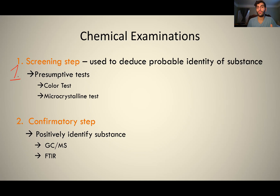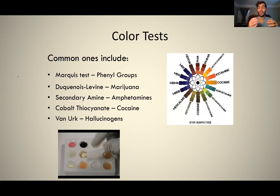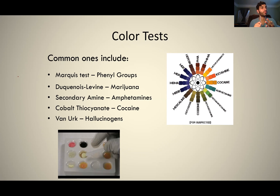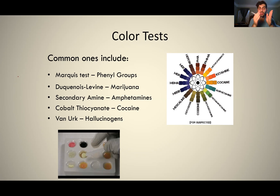In controlled substances analysis, we have two types of screening tests and we usually do them in this order: a color test and then a crystalline test. A color test is where we have colorless liquids, and when we add a little amount of the drug to that colorless liquid, it will change color depending on what drug family it's part of. The big drug families are amphetamine, methamphetamine, the opiates — heroin, morphine, codeine — and cocaine, which will cause a different color reaction. Marijuana has a certain color test associated with it, and we have a Van Erck's color test for hallucinogens, so that would be LSD or mushrooms. We add a little bit of the drug to our color test and depending on the color, that tells us what road we're going to go down.